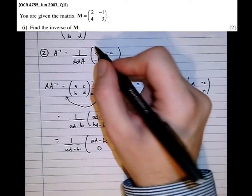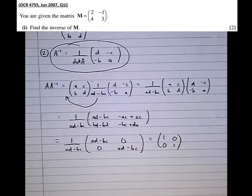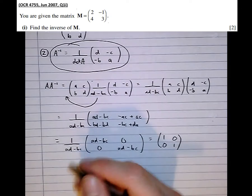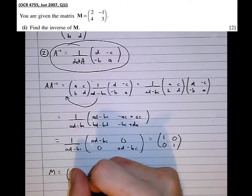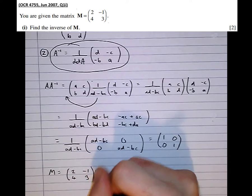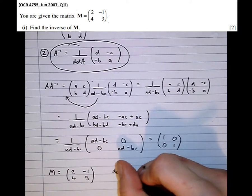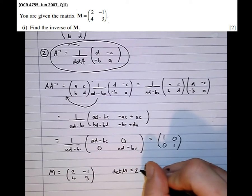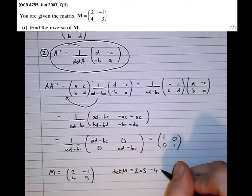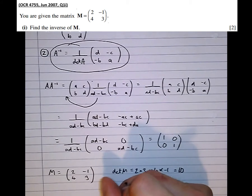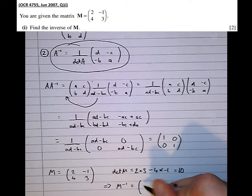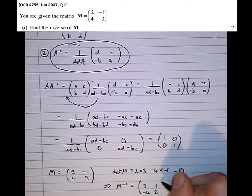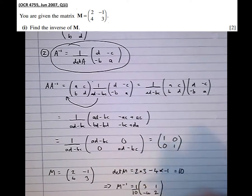So to find the inverse of a matrix, these are the two steps you follow. Let's apply this to an exam question. We have the matrix M equals 2, 4, minus 1, 3. First, the determinant of M is 2 times 3 take 4 times minus 1, which equals 10. The inverse of M is therefore 1 over 10 times the matrix: swap the diagonal to get 3 and 2, and negate the off-diagonal to get minus 4 and 1.